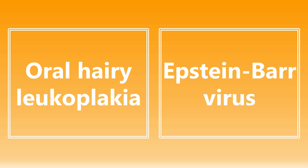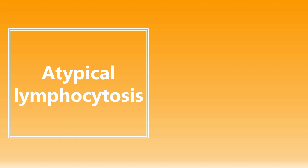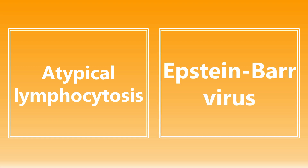Moving on: oral hairy leukoplakia. Remember, this can be seen in HIV and other immunocompromised states. The causative agent here is going to be Epstein-Barr virus. Atypical lymphocytosis is also going to be Epstein-Barr virus. Remember, atypical lymphocytosis is seen in mononucleosis, and the causative agent there is Epstein-Barr virus.